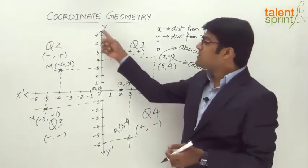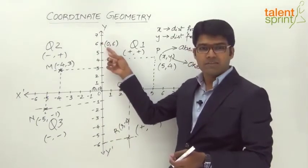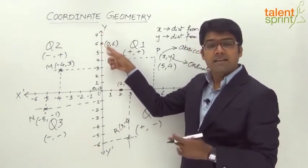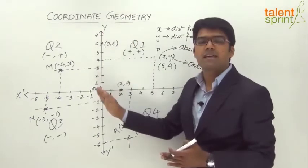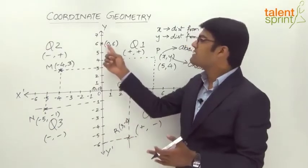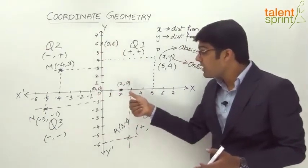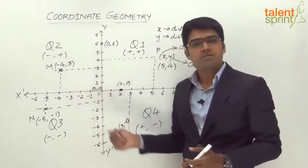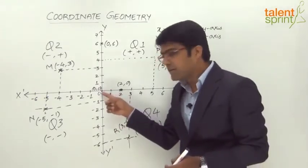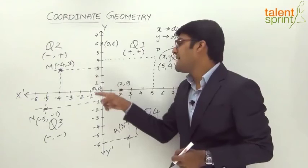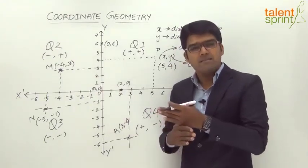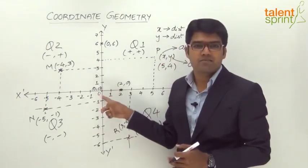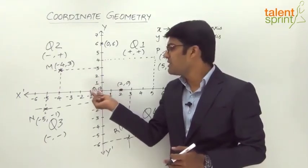Similarly, any point which is on the y-axis will have an abscissa equal to 0. If a point is on the y-axis, the abscissa indicates the distance from the y-axis, and since the point itself is on the y-axis, its distance from the y-axis is 0. So abscissa is 0 for a point on the y-axis, and ordinate is 0 for a point on the x-axis. The intersection of the two axes is the origin, denoted by (0, 0). The origin falls on both x-axis and y-axis, so both ordinate and abscissa are 0.